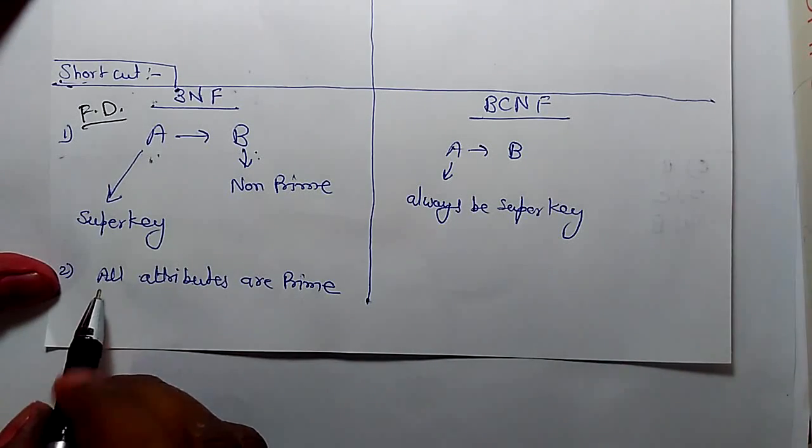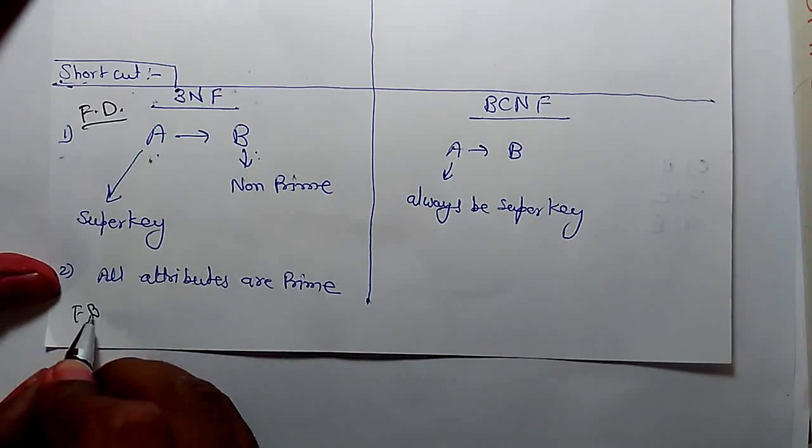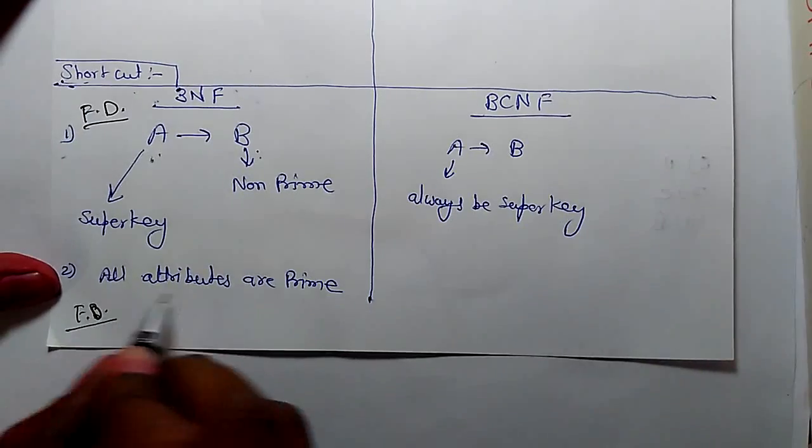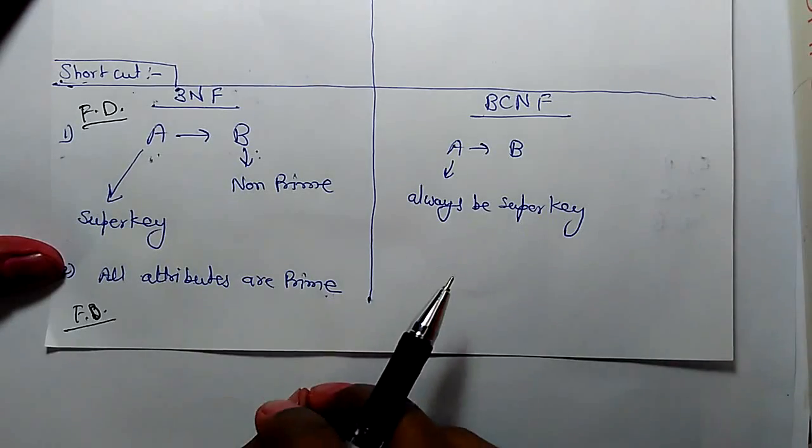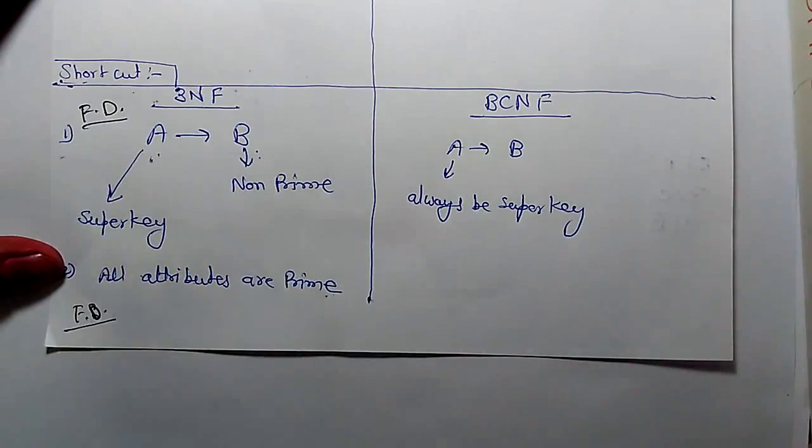So if in any functional dependency all the attributes are prime, it means you will not get any attribute at right hand side. It doesn't matter whether left hand side is a super key or not. It will be in 3NF.